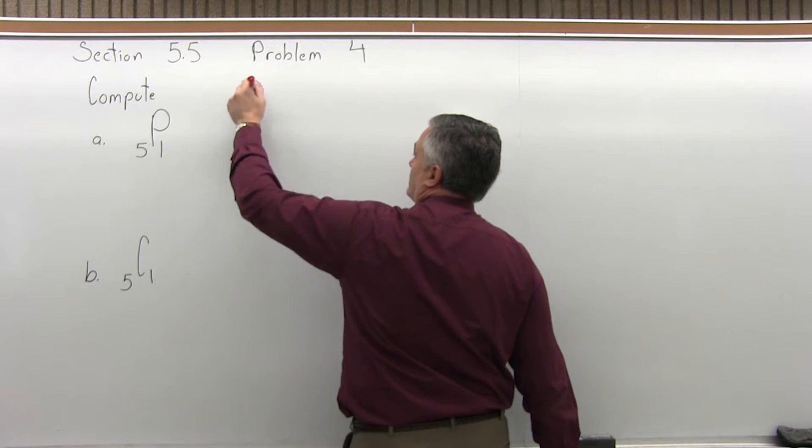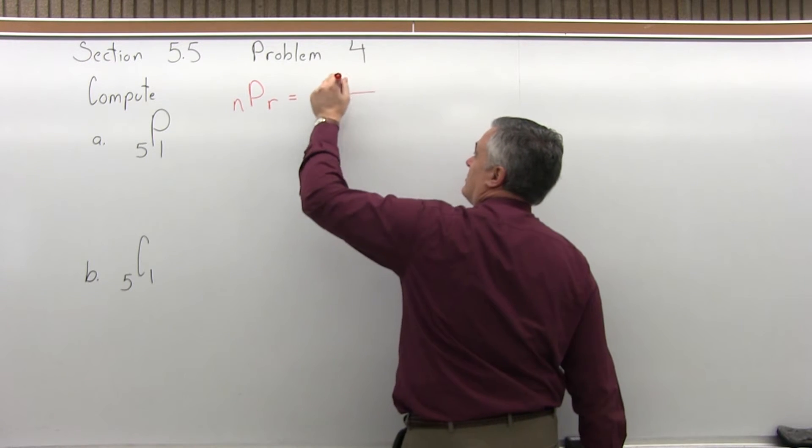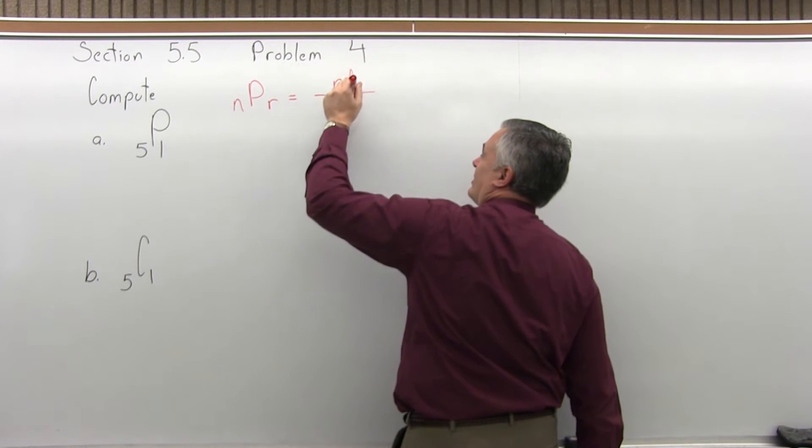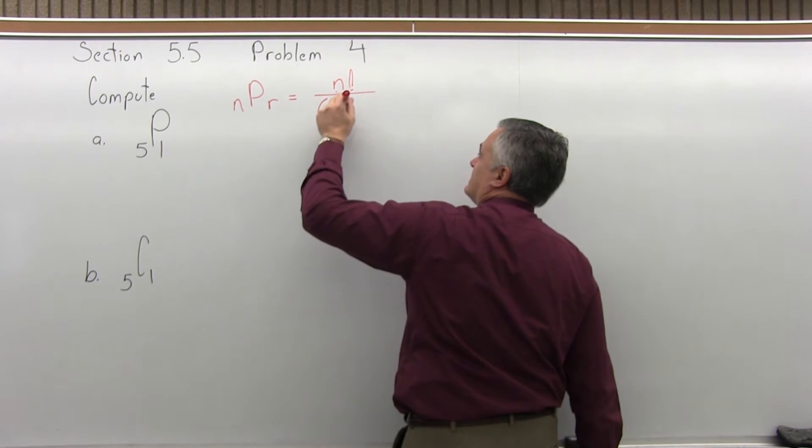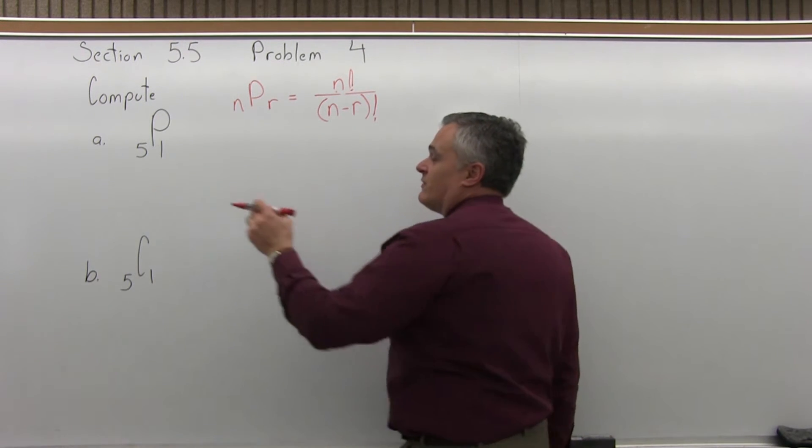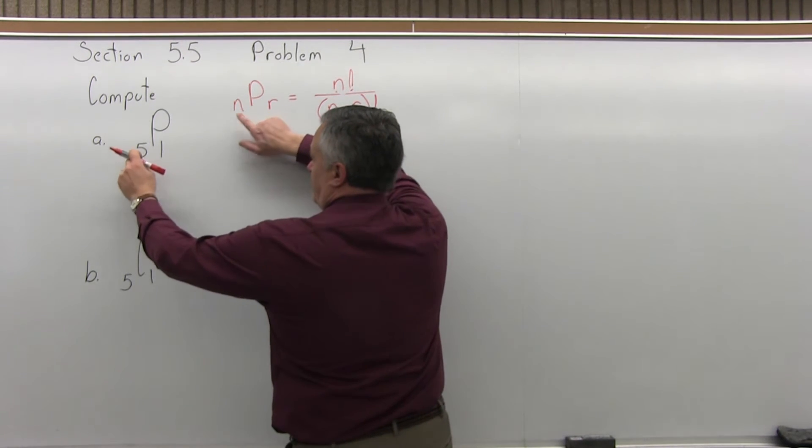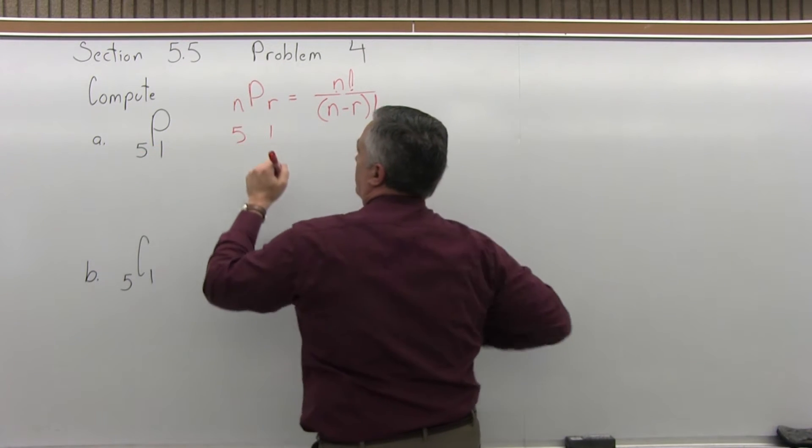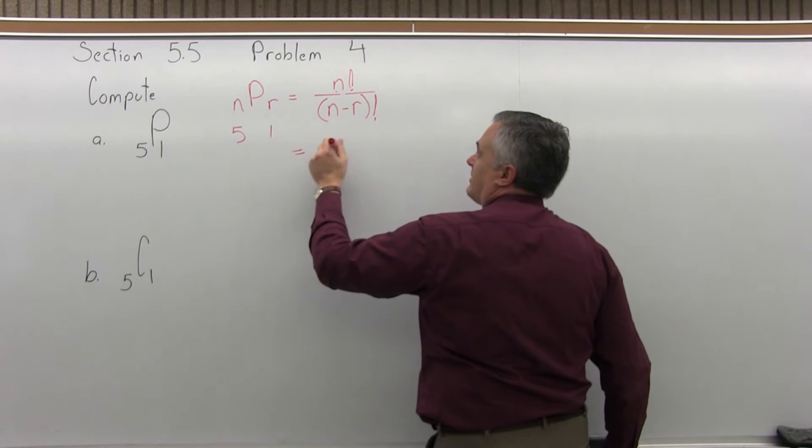n permutation r is equal to n factorial over in parentheses n minus r factorial. So for this particular problem, the n is 5. The larger value is the n, and the r, the smaller value, is 1. So as I put that into my formula...